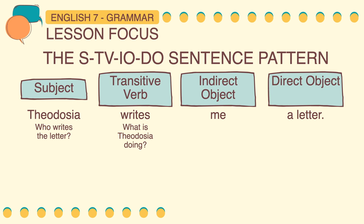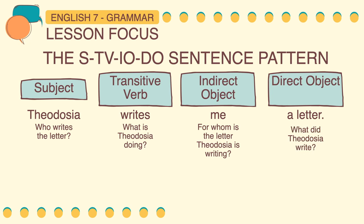After the transitive verb, there are two objects. The object me answers the question: for whom is the letter Theodosia is writing? While the object a letter answers the question: what did Theodosia write? The letter directly receives the action writes, while me indirectly receives the action. Therefore, me is an indirect object, while a letter is the direct object.